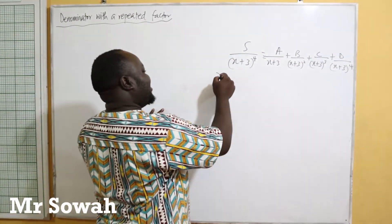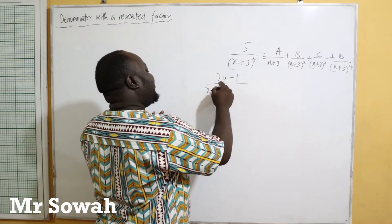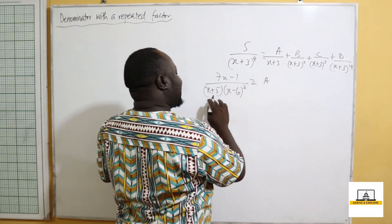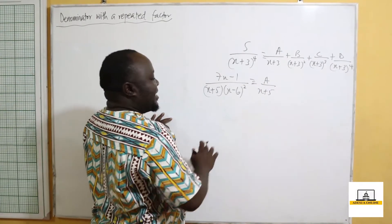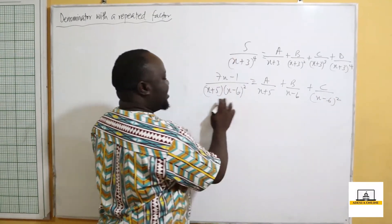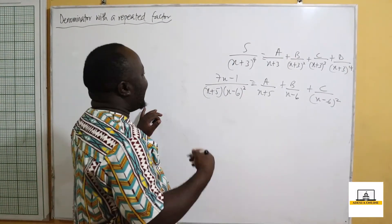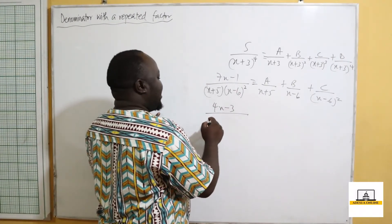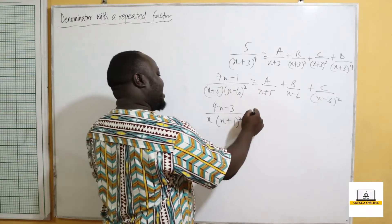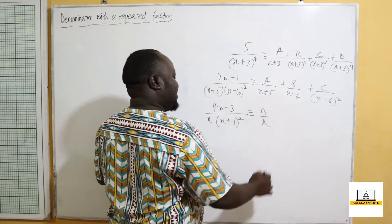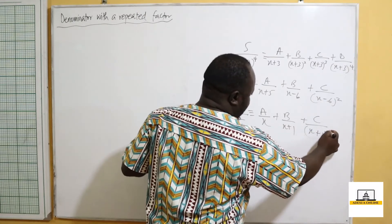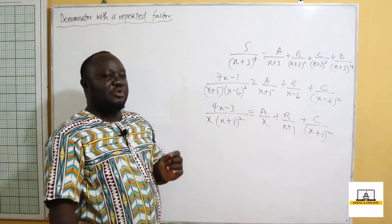For example, 7x minus 1 over (x+5)(x−6)² becomes A over (x+5) for the linear factor, then B over (x−6) plus C over (x−6)² for the repeated factor. Similarly, (4x−3) divided by x(x+1)² is written as A over x, plus B over (x+1), plus C over (x+1)². This is how repeated factors are handled.